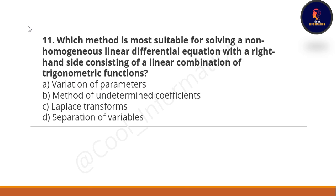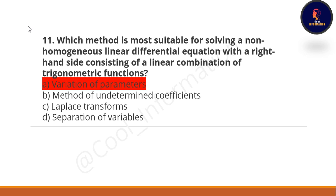Next question: which method is most suitable for solving a non-homogeneous linear differential equation with the right hand side consisting of a linear combination of trigonometric functions? The correct option is option A — variation of parameters.